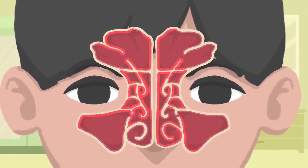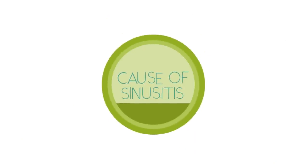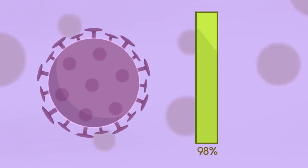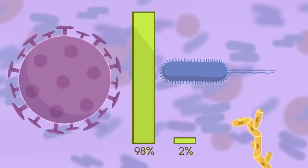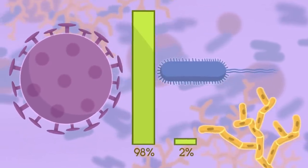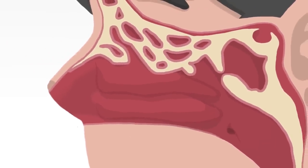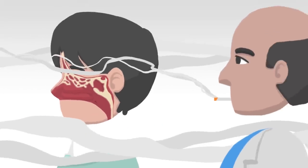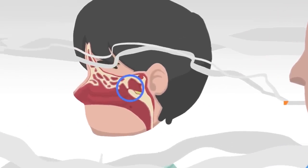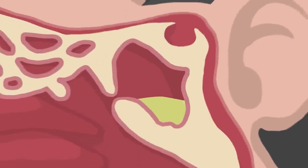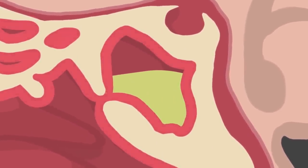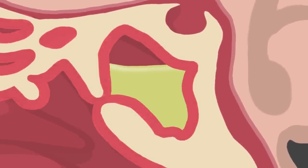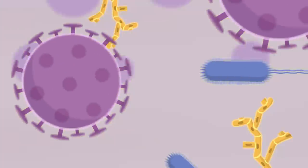Sinusitis means your sinuses are inflamed. 98% of sinusitis occurs due to viral infection; it can also be caused by bacterial or fungal infection. Predisposing factors include allergic rhinitis, exposure to smoke or cigarette smoking, and anatomical abnormalities that make it difficult for sinuses to drain. The central event in sinusitis is blockage of the sinus openings, or ostia, as a result of inflammation. Obstructed sinuses become an ideal environment for bacterial infection.